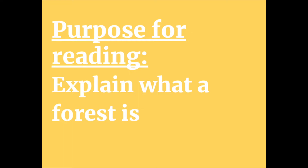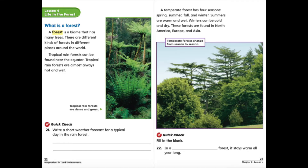Your purpose for reading today is to be able to explain what a forest is. A forest is a biome that has many trees. There are different kinds of forests in different places around the world. Tropical rainforests can be found near the equator and are almost always hot and wet. A temperate forest has four seasons: spring, summer, fall, and winter.